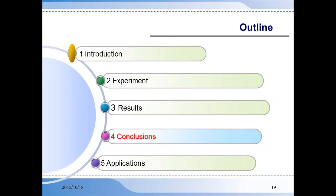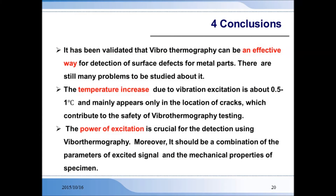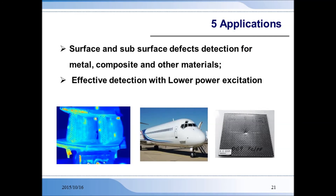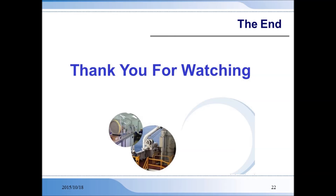In conclusion, it has been validated that vibrothermography can be an effective way for detection of surface defects in metal parts, though there are still many problems to be studied. The temperature increase due to vibration excitation is about 0.5 to 1 degree Celsius, appearing mainly at the location of cracks, which contributes to how safe vibrothermography testing is. The power of excitation is crucial for detection, and there is significant potential for using vibrothermography to detect all kinds of defects in a variety of materials. Techniques for effective detection with lower excitation power would be key for further development. Thank you for watching.